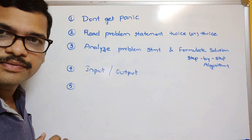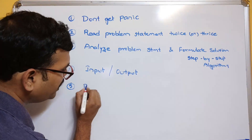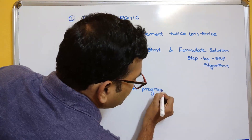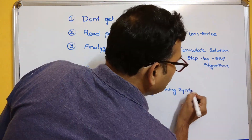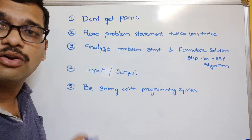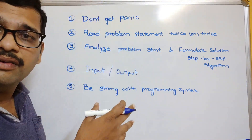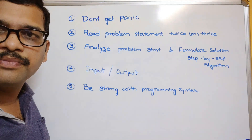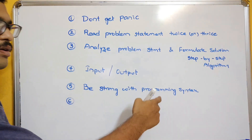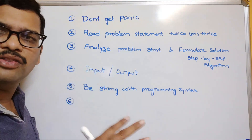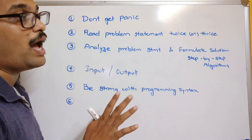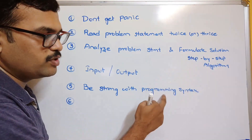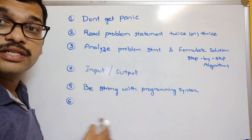After formulating the solution, you must be very strong on the syntax. Be strong with the programming syntax — whatever programming language you choose, whether Java, C, C++, or Python, you have to know where and how to use each concept and statement. Now convert this algorithm — this step-by-step process — using your programming language. Implement it and start writing the code.